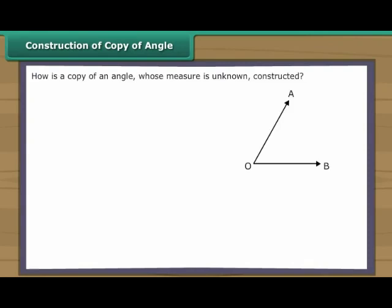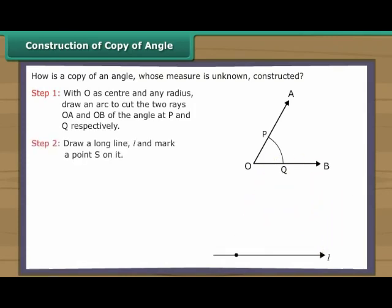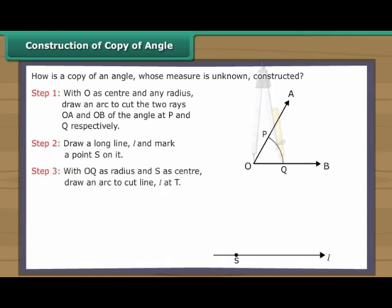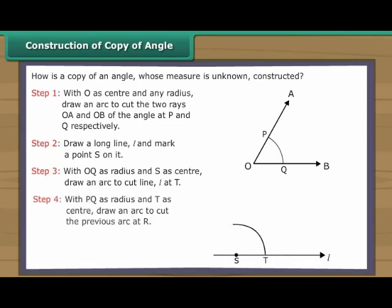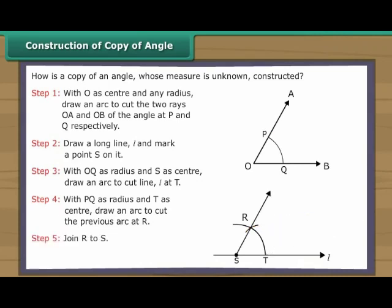Construction of Copy of Angle. How do we construct a copy of an angle whose measure is unknown? Angle AOB is given. With O as centre and any radius, draw an arc to cut the two rays OA and OB of the angle at P and Q respectively. Draw a long line L and mark a point S on it. With OQ as radius and S as centre, draw an arc to cut line L at T. With PQ as radius and T as centre, draw an arc to cut the previous arc at R. Join R to S. Angle RST is equal to angle AOB.